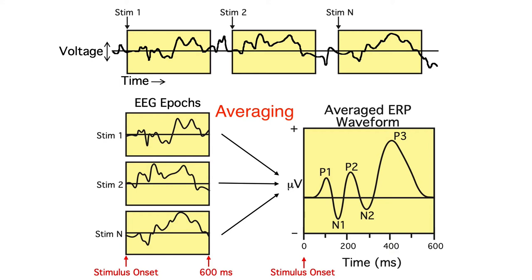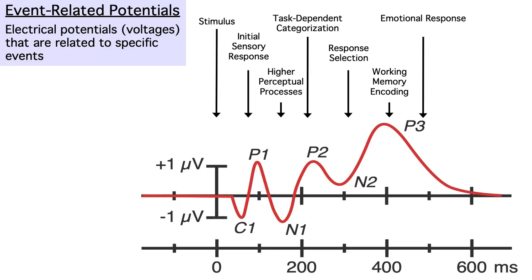This gives us an average ERP waveform. Each time point in the average waveform is simply the mean across epochs at that time point.